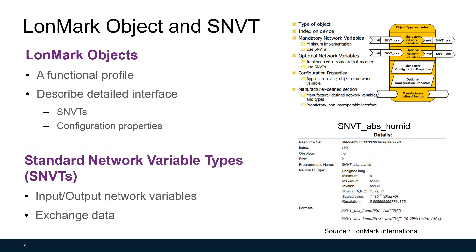Key concepts in LonWorks are LonMark objects and standard network variable types, or SNVTs. LonMark objects are a collection of network variables, configuration properties, and associated behavior. They define standard formats and semantics for how information is exchanged between LON devices on a LonWorks platform. SNVTs are input-output network variables used in LonWorks, and they are directional — either network variable inputs or network variable outputs. LON devices communicate with each other using SNVTs, and an example of an absolute humidity network variable input SNVT is shown here.